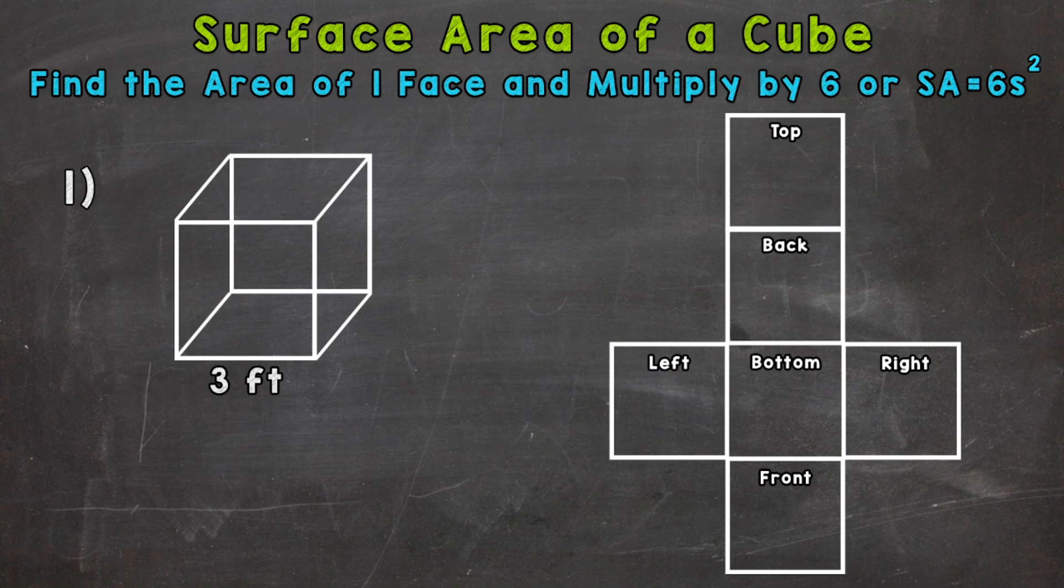There's also a formula over here that does the exact same thing as finding one area and multiplying it by six. It's just in formula form there. So surface area equals six times one side length squared. So let's jump into our example where we have a cube with a side length of three feet.